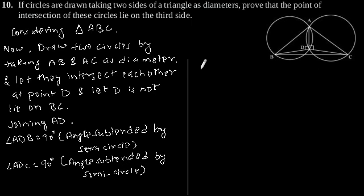We can say that angle BDC is equal to angle ADB plus angle ADC. Angle ADB is equal to 90 degrees.